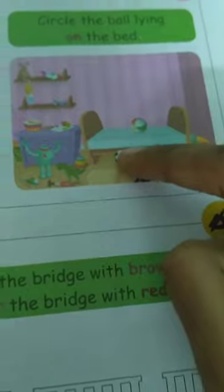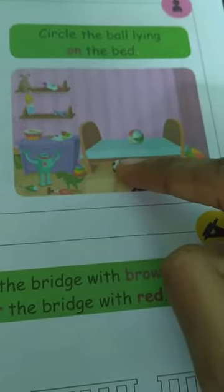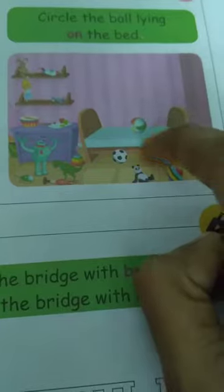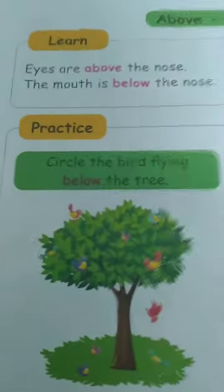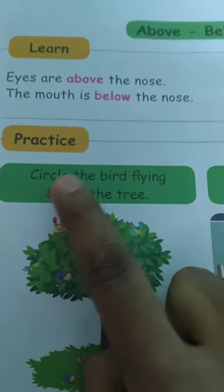Now, where are the balls? There are two balls. We want to circle the ball which is 'on'. On means the uppermost place. Which ball is at the uppermost place? Yes, this ball only is at the uppermost place, so we put the circle on this ball.